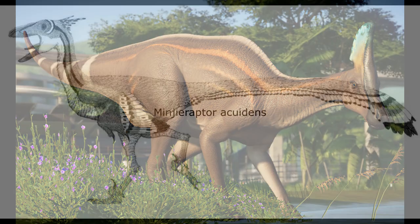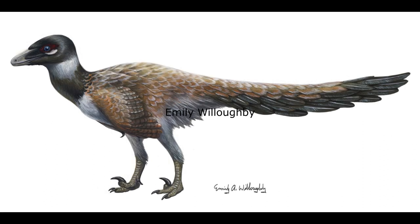The final member of this early Paleocene assemblage was the advanced troodontid Minjeraptor aquidens, known from a partial skull, teeth, tail vertebrae, and partial hind-limb elements. Like its close cousins Xanabazar and Saurornithoides, Minjeraptor was a fast, agile predator that hunted small prey with its sharp teeth and curved claws.